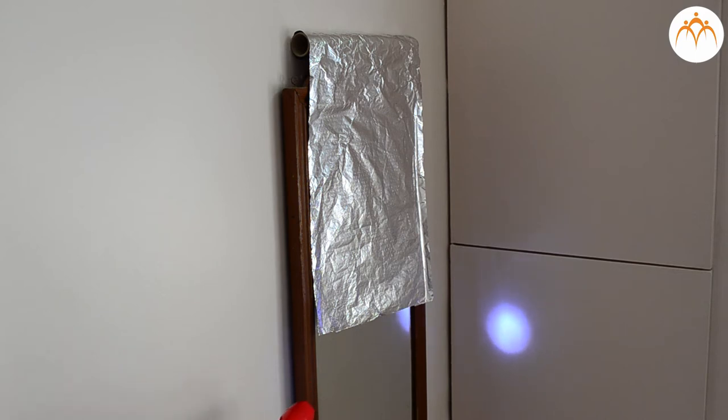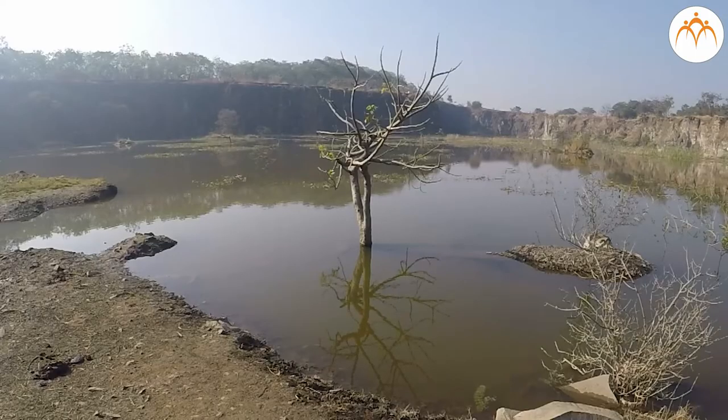When light rays hit a smooth flat surface all of the light rays are reflected. These light rays bounce off in the same direction. When you look into the mirror this is what happens and you see a reflection of yourself.